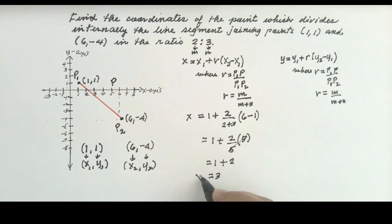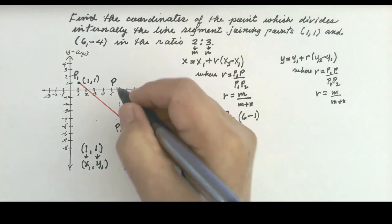This simplifies to 1 plus 2, so x equals 3. This is the x-coordinate of P.